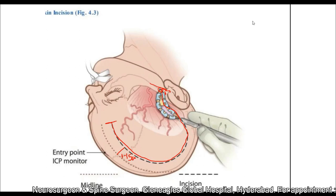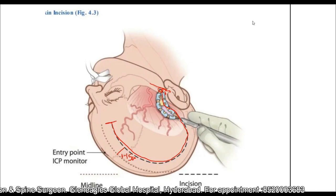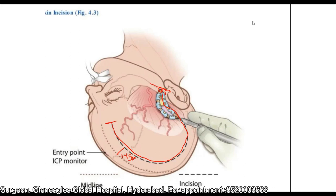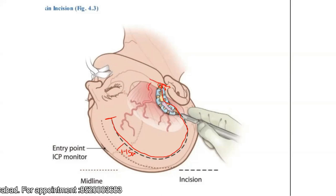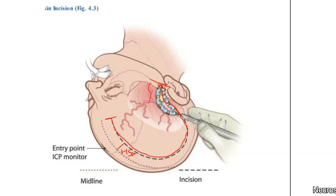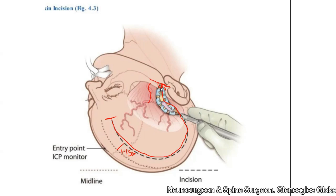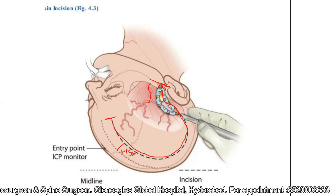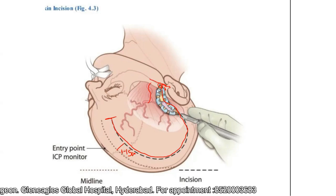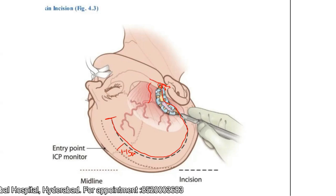One more precaution when taking the incision relates to the superficial temporal artery. In majority of cases, particularly when the patient is lean, you can palpate the superficial temporal artery. When you are designing an incision, take it in such a way that you are going to spare the superficial temporal artery. That enhances the viability of the flap.